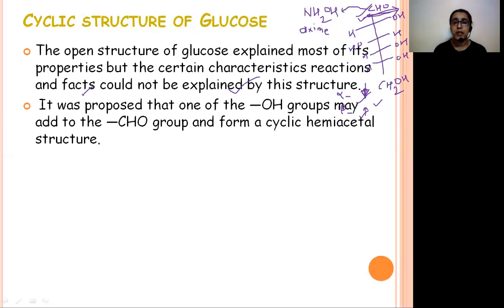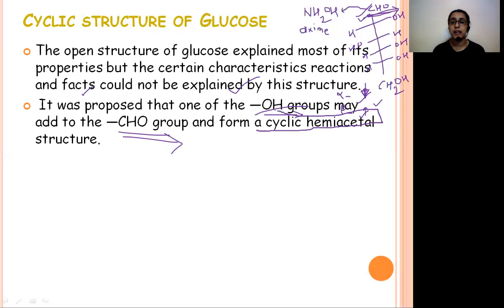Another limitation: there are two forms of glucose — alpha glucose and beta glucose, which you get at different temperatures. Beta glucose crystallizes out at higher temperature, alpha glucose at lower temperature. These two forms could not be explained by the open chain structure. So there are certain limitations to the open chain structure.